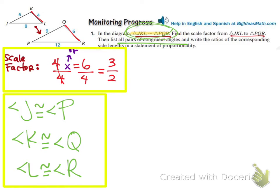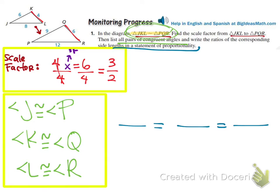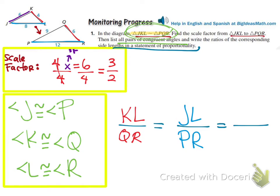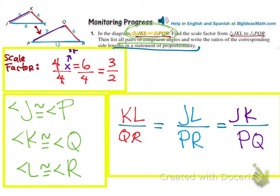Write the ratios of the corresponding side lengths in a statement of proportionality. We take all three sides of the triangle and set them equal. KL over QR equals JL over PR equals JK over PQ. This is a statement of proportionality. You are going to practice on the next page — it's an example just like this.